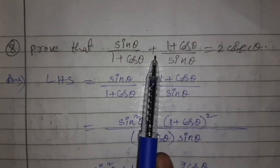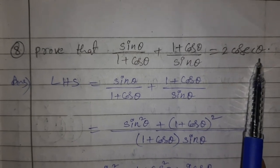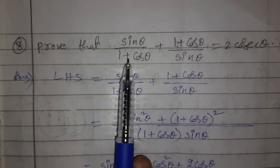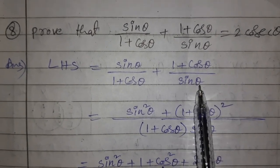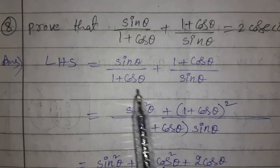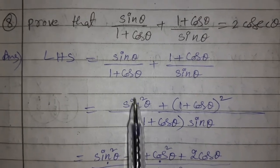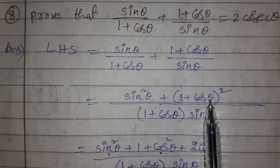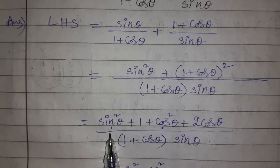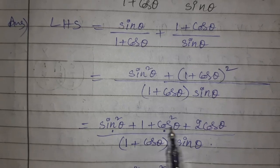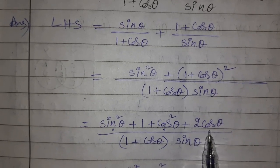Eighth question: prove that sin θ/(1 + cos θ) + (1 + cos θ)/sin θ = 2 cosec θ. Consider the LHS. Taking LCM of the denominators and cross-multiplying: numerator becomes sin²θ + (1 + cos θ)².